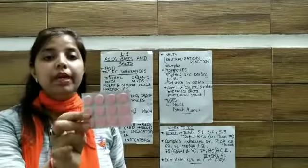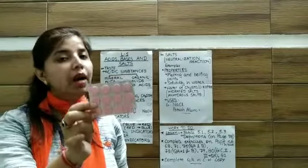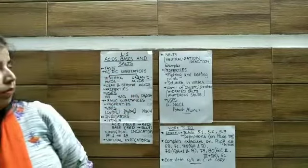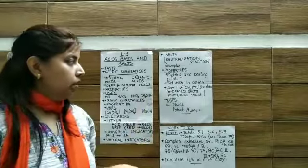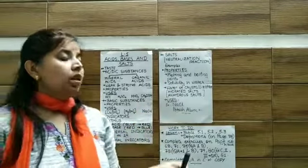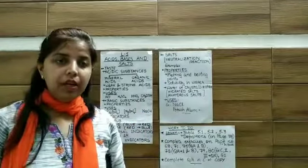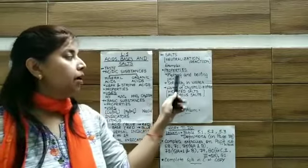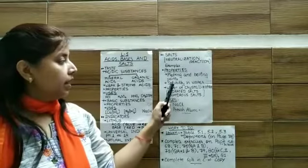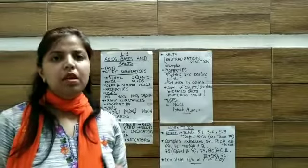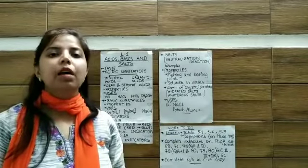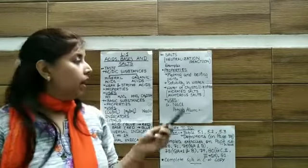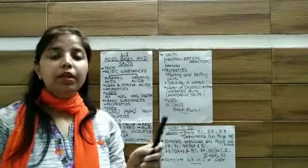Because it has a base—magnesium hydroxide. Properties of salts: First, salts are generally solid and have high melting and boiling points. Second is solubility in water—some salts are soluble like common salt (NaCl), and some are insoluble like silver chloride.